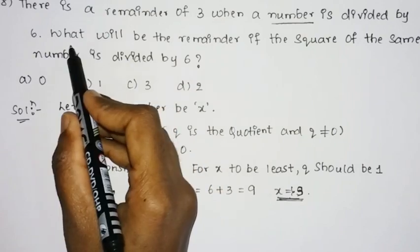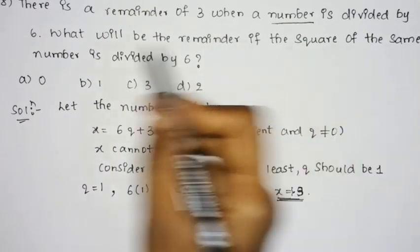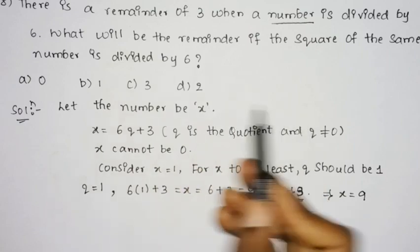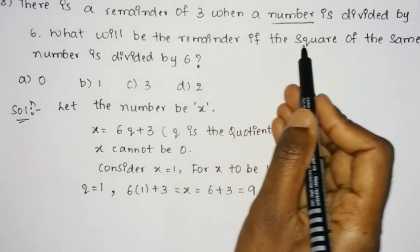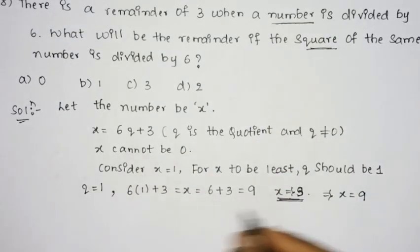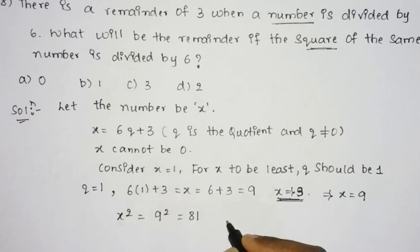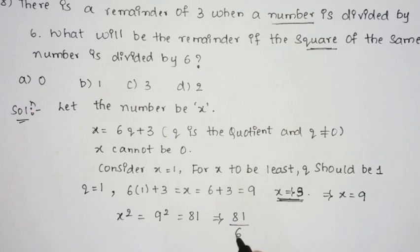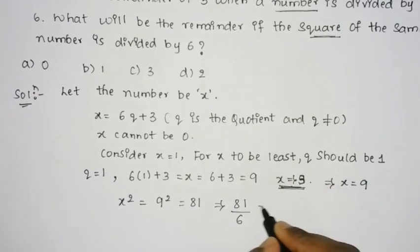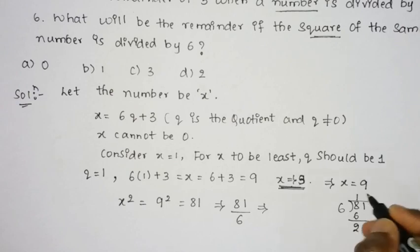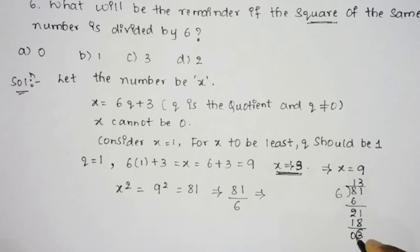The question asks: what will be the remainder if the square of the same number is divided by 6? We found x = 9, so x² = 9² = 81. Now dividing 81 by 6: 6 × 13 = 78, and 81 − 78 = 3. So the remainder is 3.